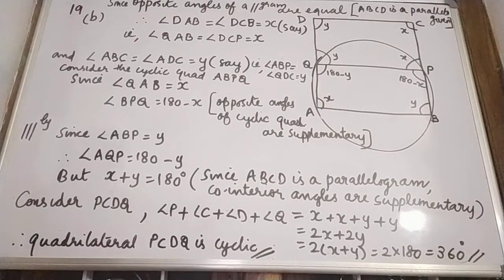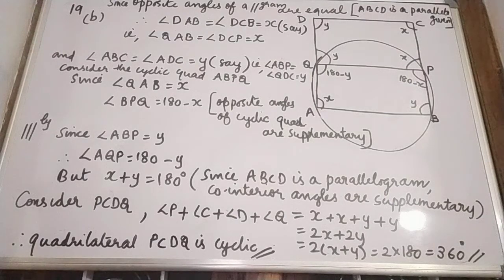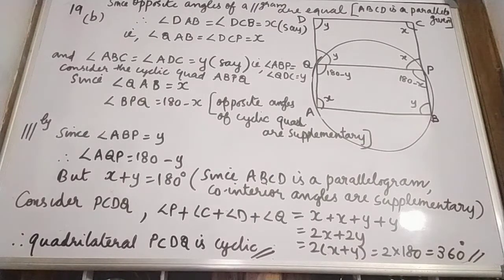Exercise 17A, question number 19, B part. ABCD is a parallelogram. A circle through vertices A and B meets side BC at point P and side AD at point Q. Show that quadrilateral PCDQ is cyclic.